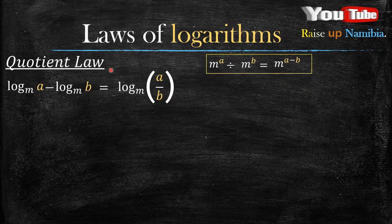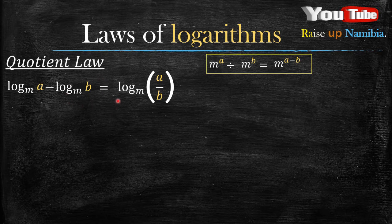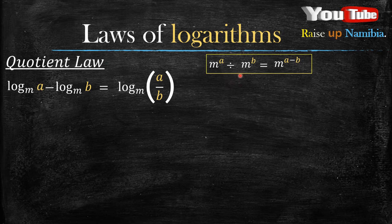That's why in our answer we have a over b. Now, you've probably heard that logarithms are the reverse operation of indices or exponents.